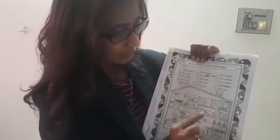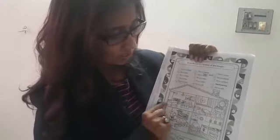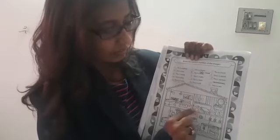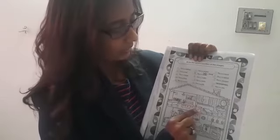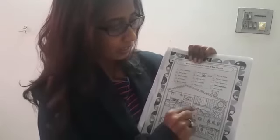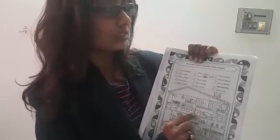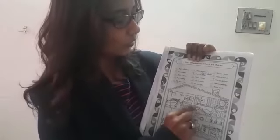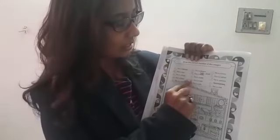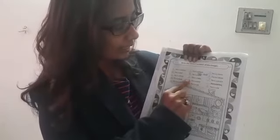This is a toilet. See, where is the toilet here? Here is a toilet. Which number is written here? It is 3. You have to write here 3.